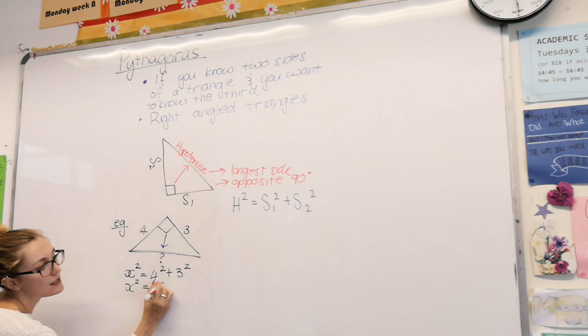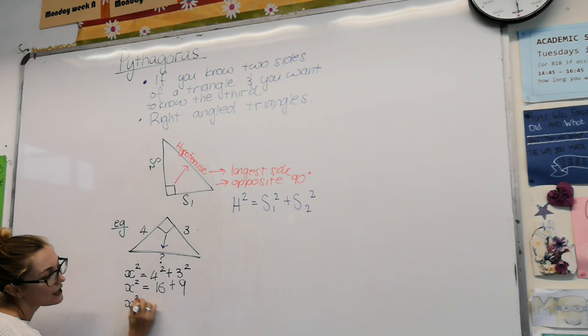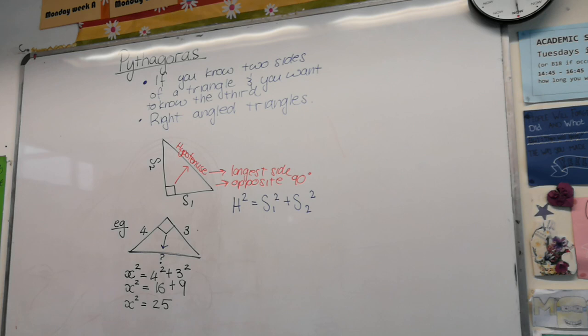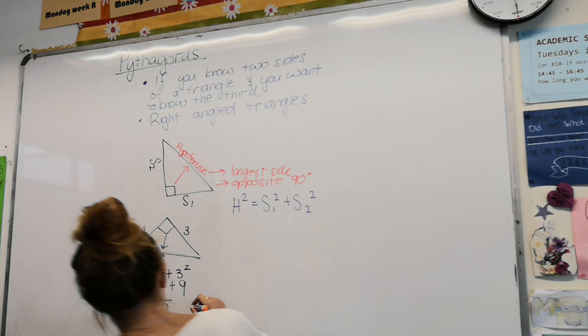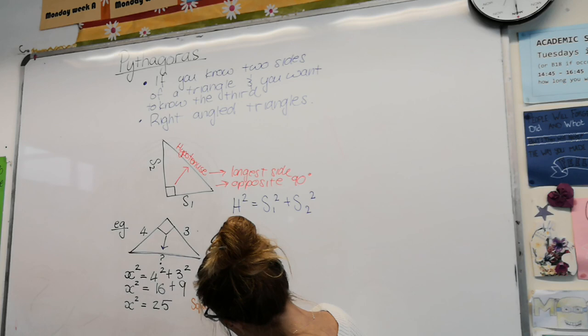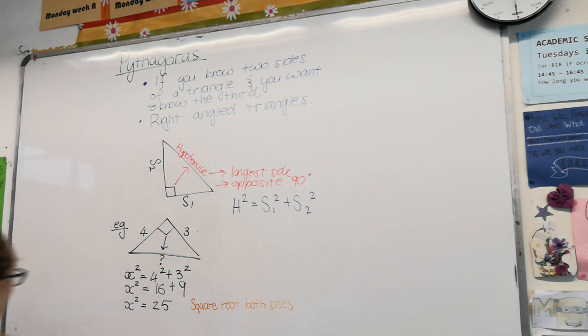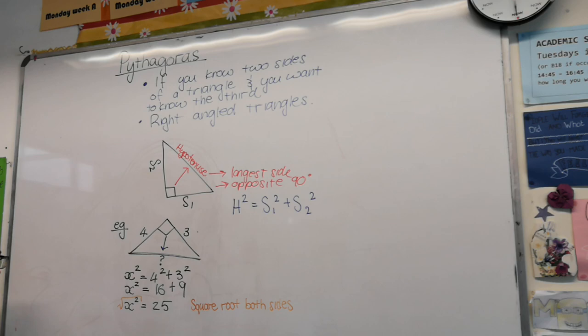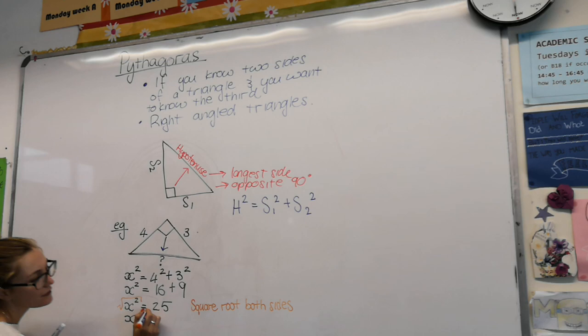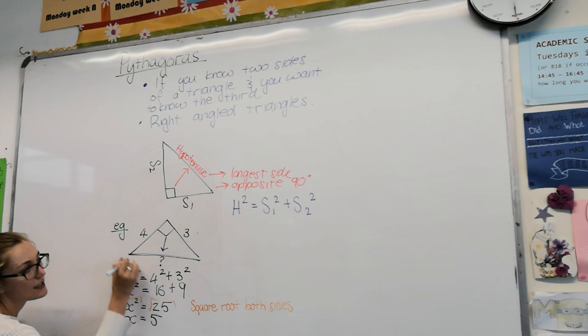Now we simplify. So this side stays x squared. Here we've got 16. 3 squared becomes 9. We add those two together and we get x squared equals 25. And please always remember, very important, the last step in Pythagoras' theorem is to square root both sides at the end. Never forget that piece. Square root both sides. So we're going to go ahead and do that. When we square root x squared, we get just x, which is what we want. We want to find out what x is. And when we square root 25, we get 5.